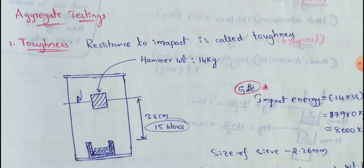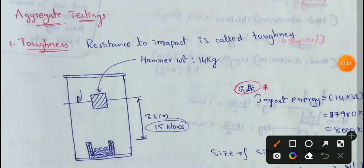First, we need to check the toughness. What is toughness? Resistance to impact is called toughness.